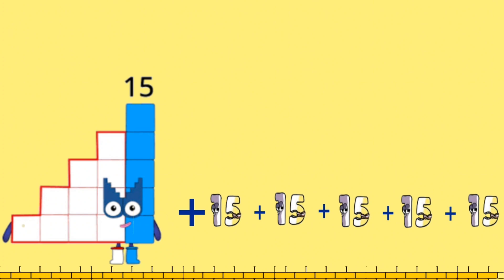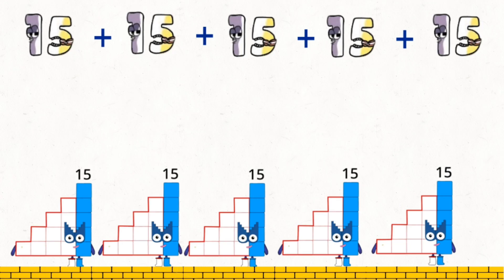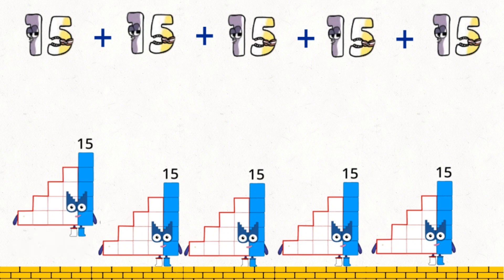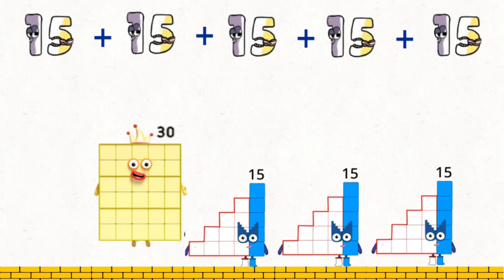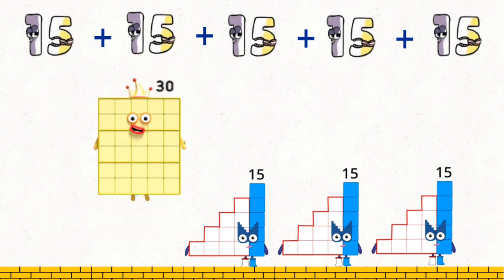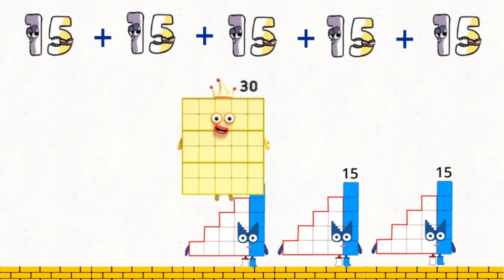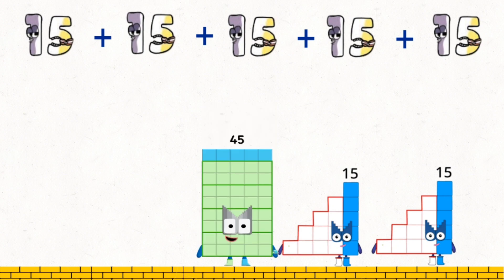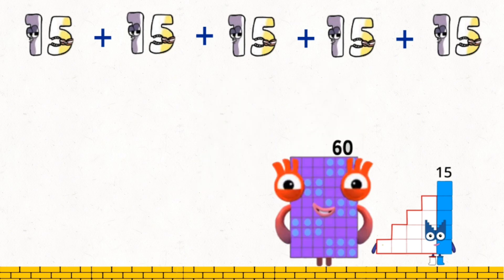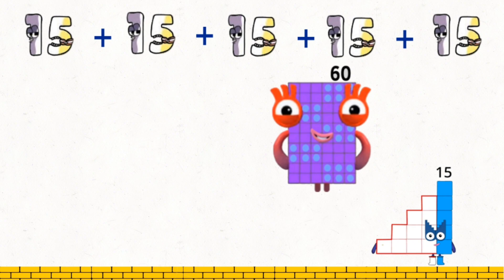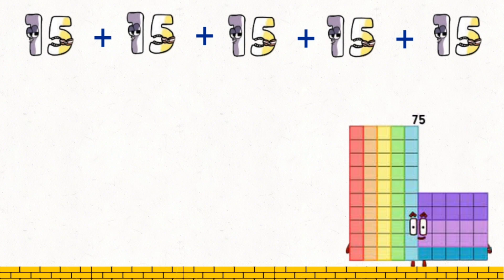15 plus 15 plus 15 plus 15 plus 15. 15 plus 15 equals 30. 30 plus 15 equals 45. 45 plus 15 equals 60. 60 plus 15 equals 75.